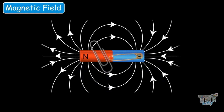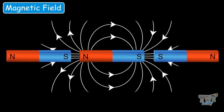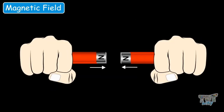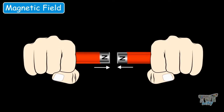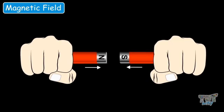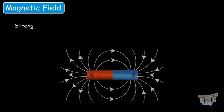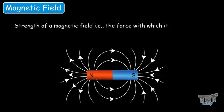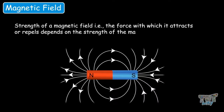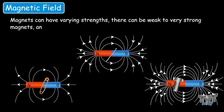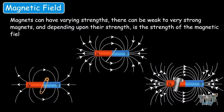And when a magnet comes into contact with the magnetic field of another magnet, it is either attracted or repelled. Bringing the north pole near a north pole causes repulsion; bringing opposite poles near each other causes attraction. The strength of a magnetic field — the force with which it attracts or repels — depends on the magnet that is creating it. Magnets can have varying strength, from very weak to very strong, and the strength of the magnet determines the strength of its magnetic field.